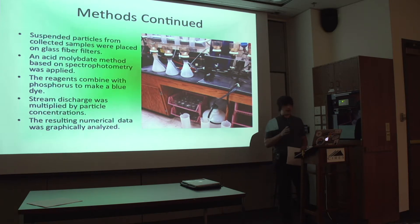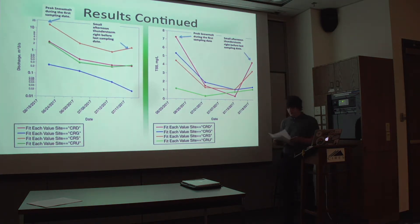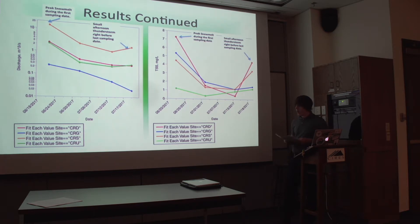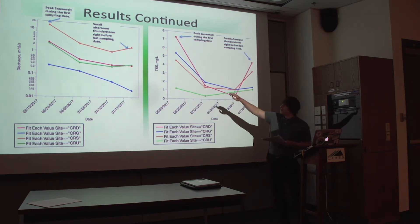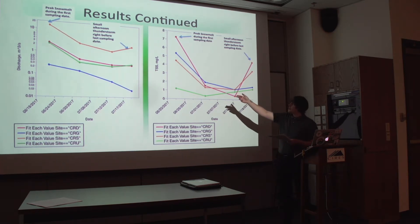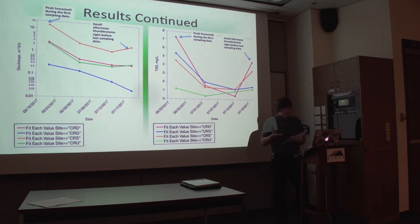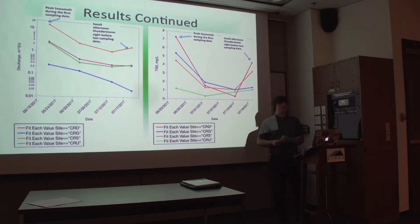We took that data and graphically analyzed it. In the figure on the left, Crater Gulch is displayed in blue. Across all sites, discharge declined over the study period after peak snowmelt. Right before the last sampling date, there was a small afternoon thunderstorm which spiked the flow slightly; however, it didn't have a measurable effect on Crater Gulch. In the next figure, total suspended solids in milligrams per liter on the y-axis versus date on the x-axis shows that the afternoon thunderstorm spiked the concentration slightly, but there wasn't enough local precipitation to significantly increase total suspended solids for Crater Gulch.